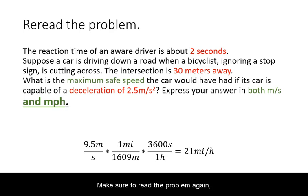Make sure to read the problem again because it still asks you to convert it back to miles per hour. According to our solution, if the driver only noticed the cyclist 30 meters away, their maximum safe speed would have been only 21 miles per hour.